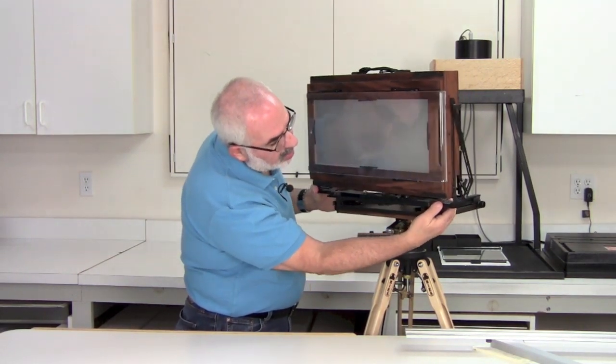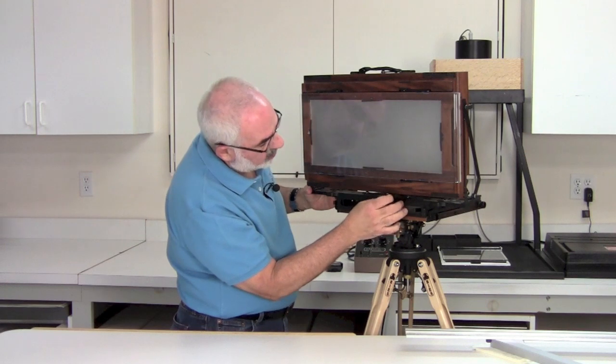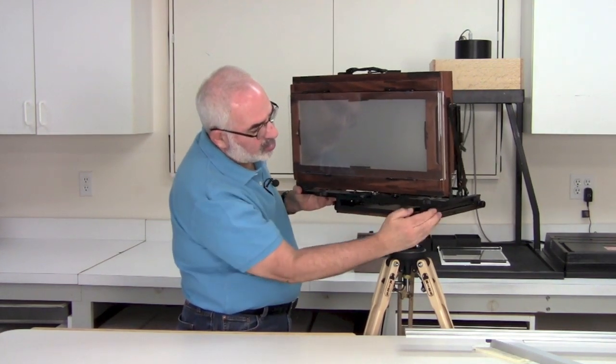And you've got these two locking bars in the back again. Now the top one is for the swing and the bottom one is for the shift.